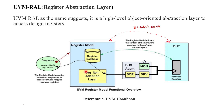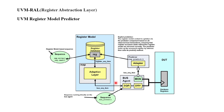That is the concept and overview of RAL. In the next slide, you will find a predictor in the diagram. The simple responsibility of the predictor is to update the register database. The predictor is a component in the UVM environment. Looking at its internal structure, it has one adapter, one inbuilt analysis export, and one register map.